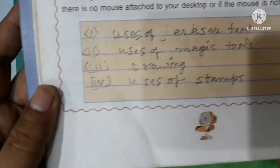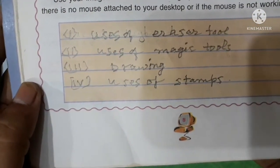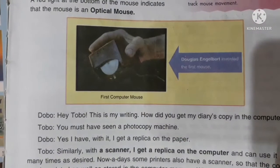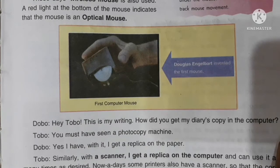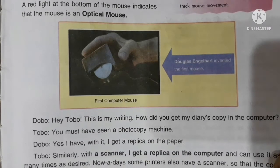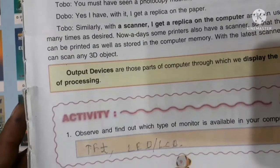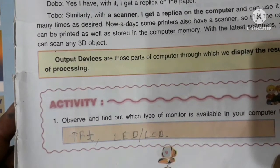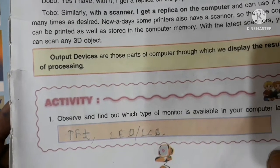Usage of eraser tool, magic tools for drawing, and stamps. Do you know that a few years back, there used to be a ball under the mouse? This ball was used to track mouse movement. Activity: observe and find out which type of monitor is available in your computer lab — LED or LCD.